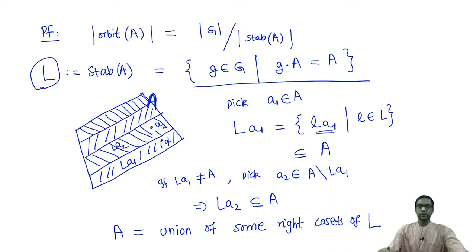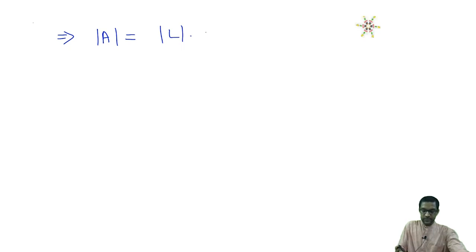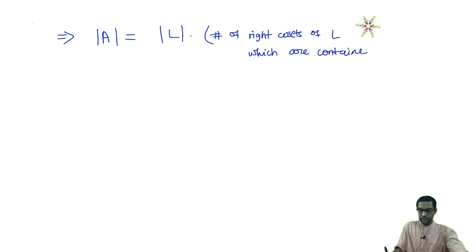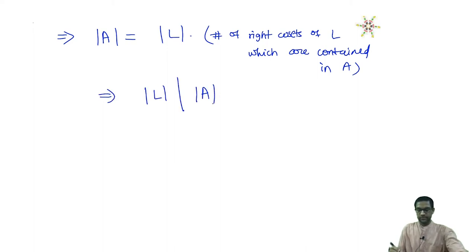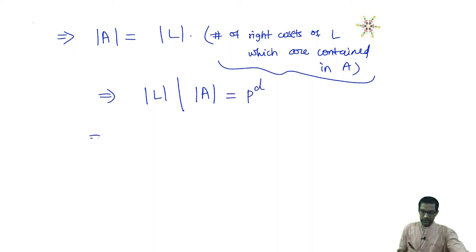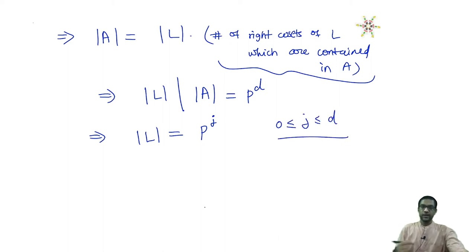In particular, this means |A| = |L| × (number of right cosets of L contained in A). Therefore |L| must divide |A| = P^d. So |L| must look like P^j for some j between 0 and d. We have concluded that the stabilizer L is also a p-group.